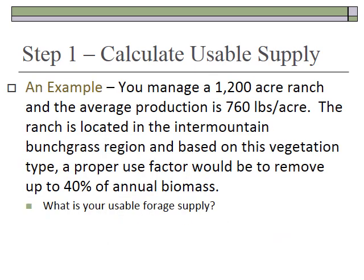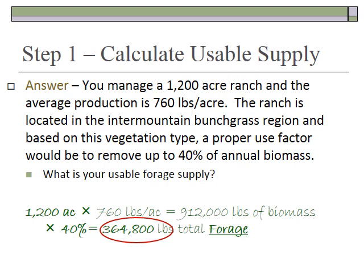For example, a manager has a 1,200-acre ranch that on average produces 760 pounds per acre, obtained from an ecological site guide. The ranch is in a Mountain Bunchgrass region, and the manager decides to remove 40% of the annual biomass, so the proper use factor is 40%. The calculation: 1,200 acres times 760 pounds per acre equals 912,000 pounds of biomass, times 40% proper use factor, giving 364,800 pounds of total usable forage. This is the amount that can be eaten by animals — that's the amount you have in the cupboard to work with.